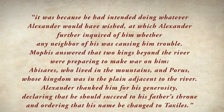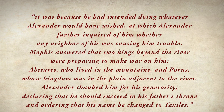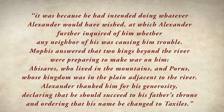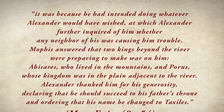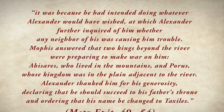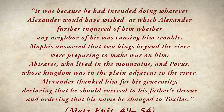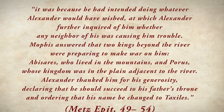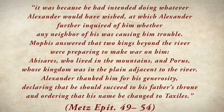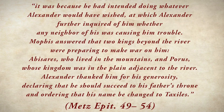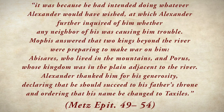In another source, when Alexander asked Ambhi why he had arrayed his army, Ambhi replied that it was because he had intended doing whatever Alexander would have wished. Alexander then inquired whether any neighbor was causing him trouble. Ambhi answered that two kings beyond the river were preparing to make war on him — Abyseris, who lived in the mountains, and Porus, whose kingdom was in the plain adjacent to the river. Alexander thanked him for his generosity, declaring he should succeed to his father's throne, and ordered that his name be changed to Taxilis. However, this story of Alexander ordering the name change has not been accepted by most scholars.